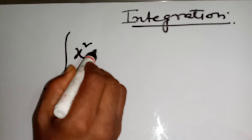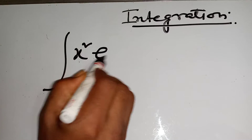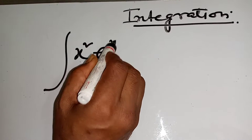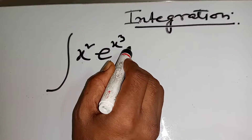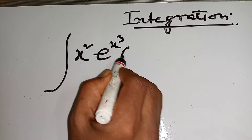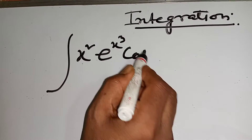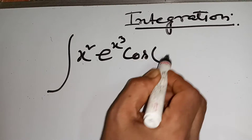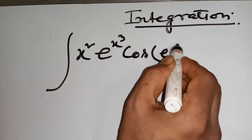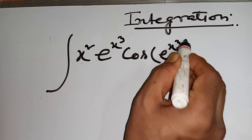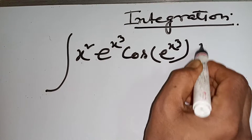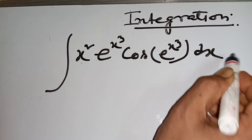x squared e to the power x cube, cos e to the power x cube, dx.